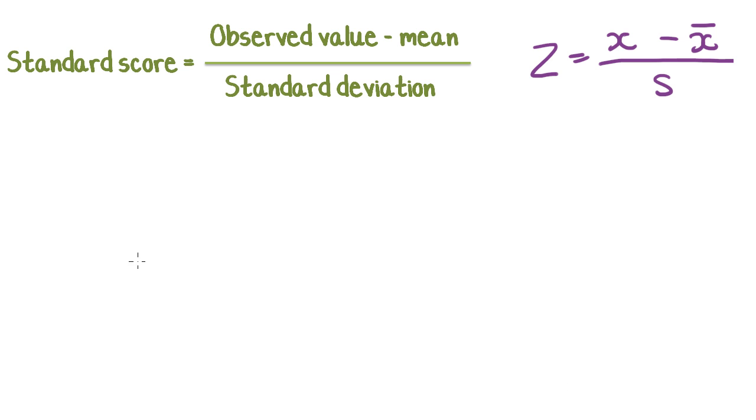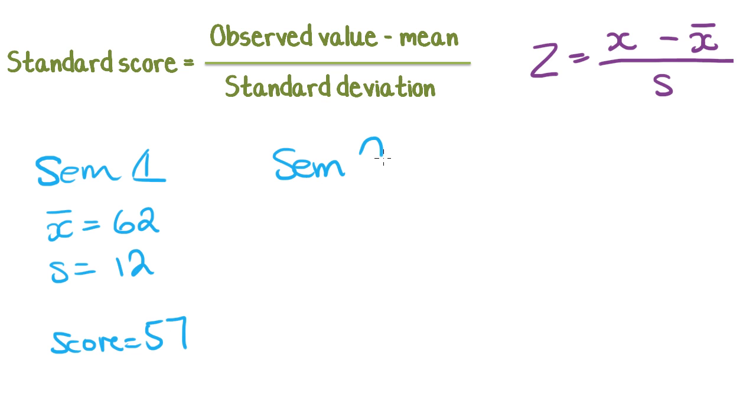So let's just do an example. Say you're taking an exam, and in semester 1, the class average, the mean was 62, and the standard deviation was 12, and in semester 1, you scored 57. And then in semester 2, the class average, the mean was 55, and the standard deviation was 14, and let's say you scored 57 in both semesters. Which semester did you do better in?